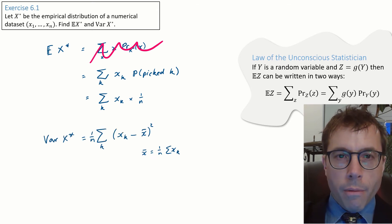Likewise, the variance of x star turns out to be just the sample variance using the same law of the unconscious statistician trick.